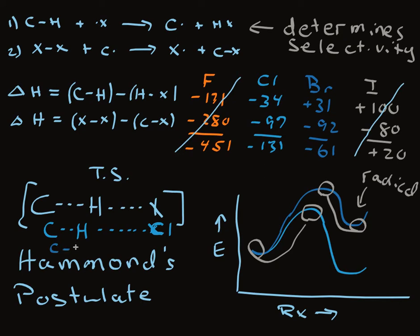And for bromination, this bond is much more broken and we've come a lot closer to forming the HX bond. So in this case, we've come a lot closer to fully forming the radical.